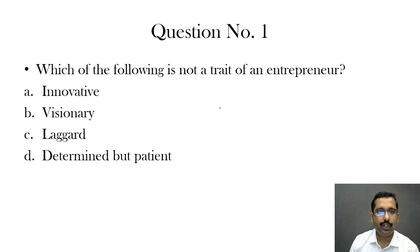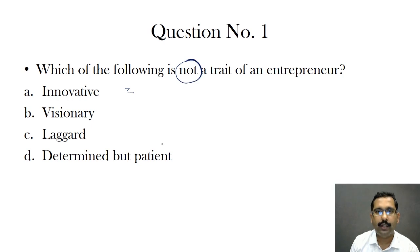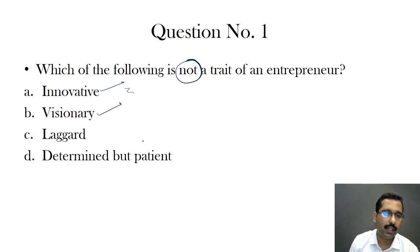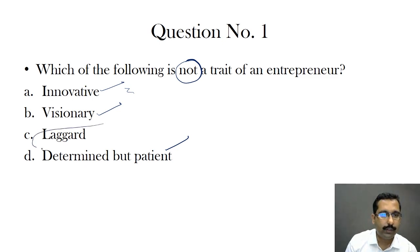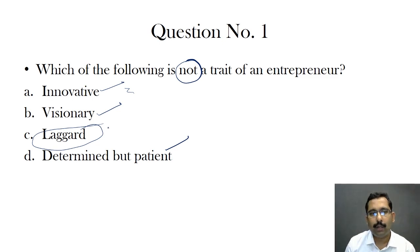Question number one: which of the following is not a trait of an entrepreneur? Innovative — any entrepreneur has to be innovative, so this is not the answer. Visionary — that is also not the answer. Determined but patient — this is also not an option. So we are left with Laggard. A Laggard is somebody who is very late to adopt new ideas and new things, so the answer for this question is option C.